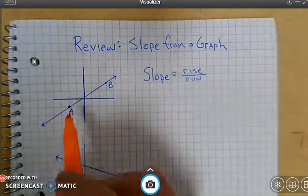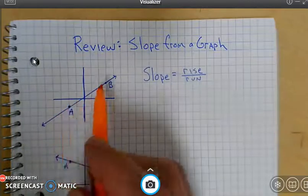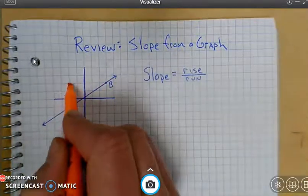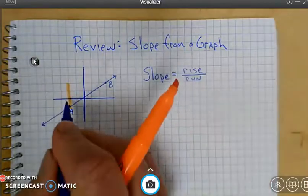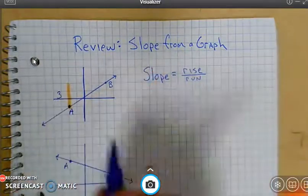So quickly looking at this, the ratio of the rise from A to B, it looks like the rise is going up 1, 2, 3, 3 units.